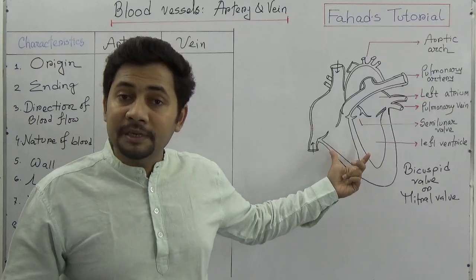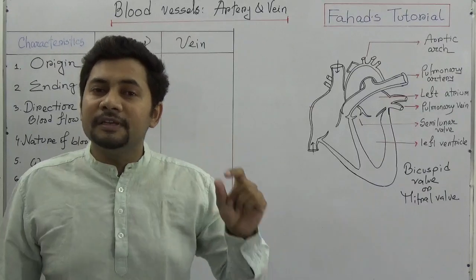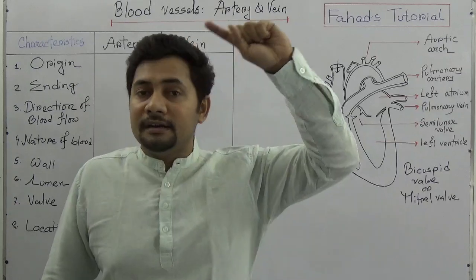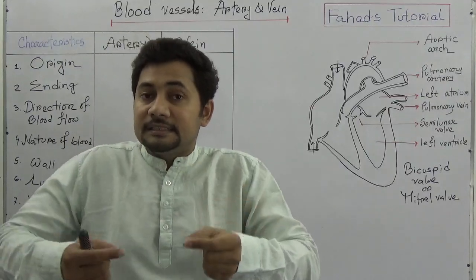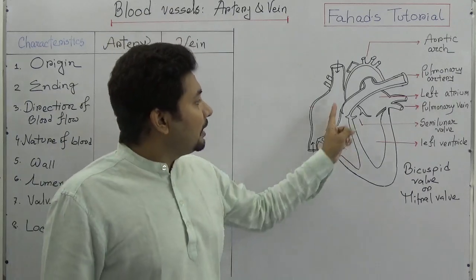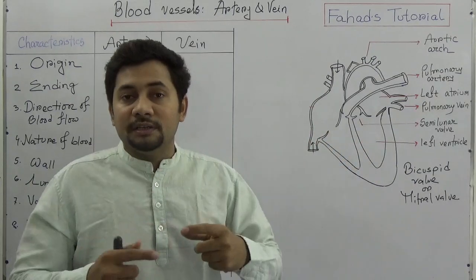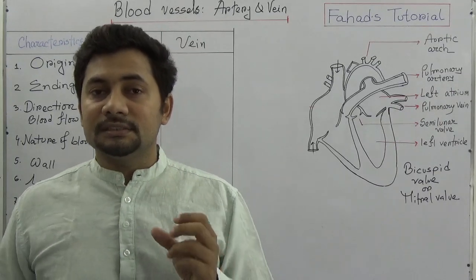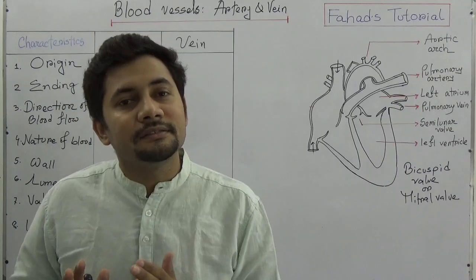Blood is circulated throughout our body by the pumping organ — the heart. Every time the left ventricle pumps blood through the artery, it reaches every corner of our body and then comes back to the heart for purification. The heart is the central pumping organ driving this circulation.